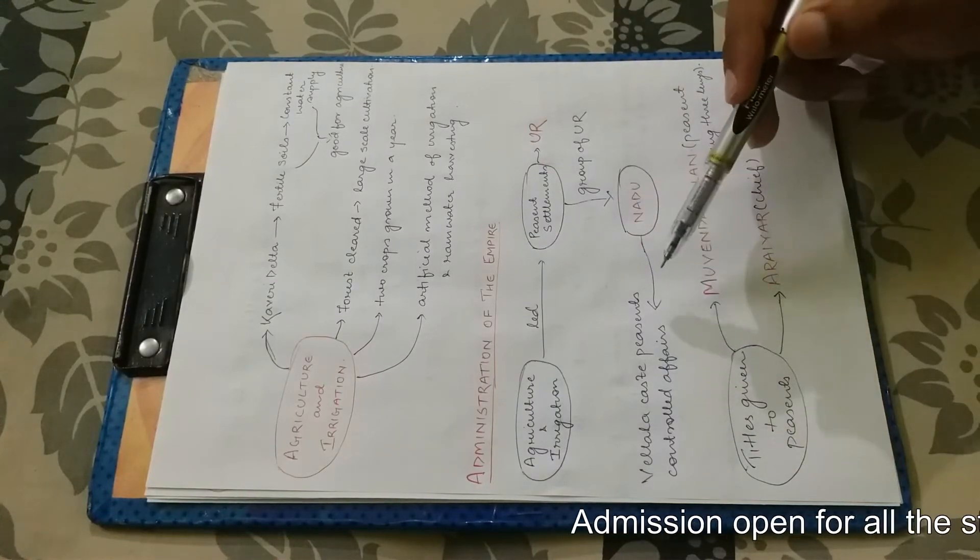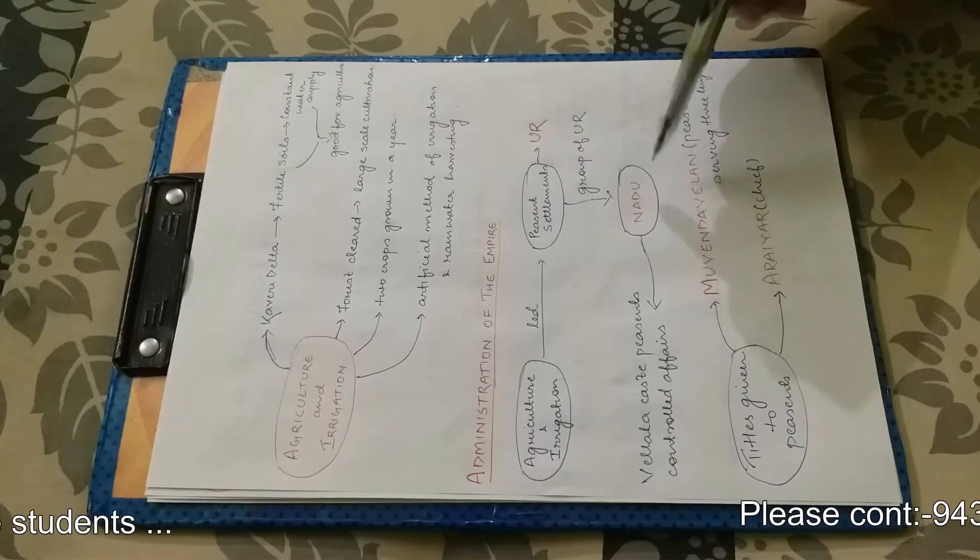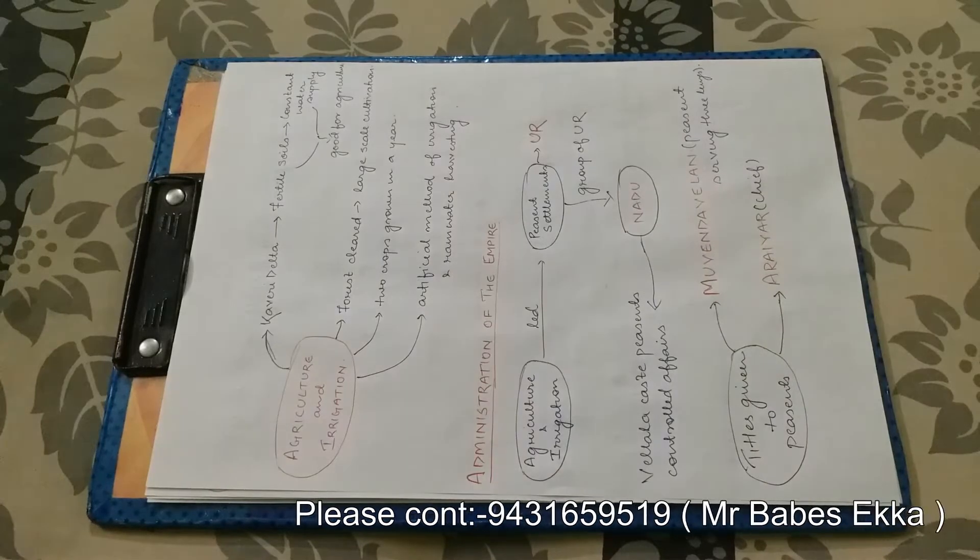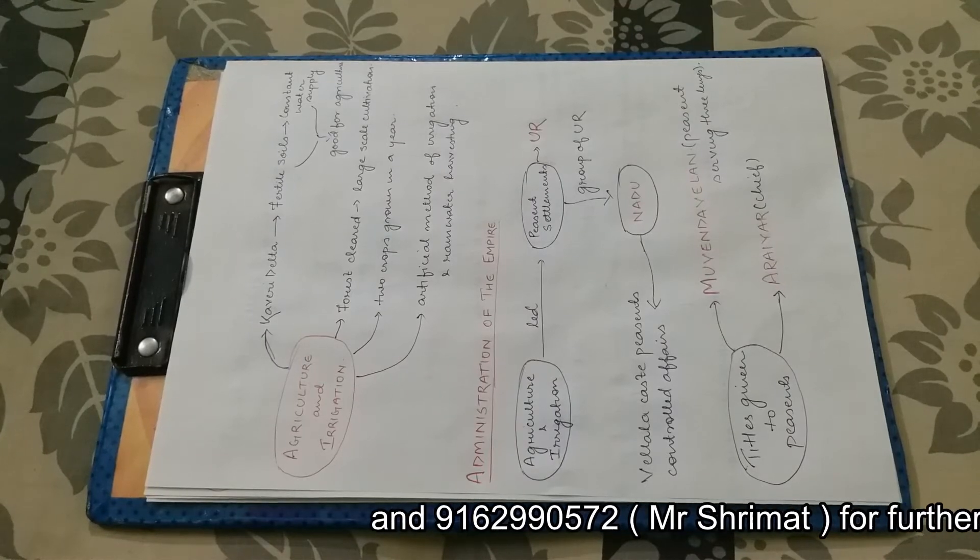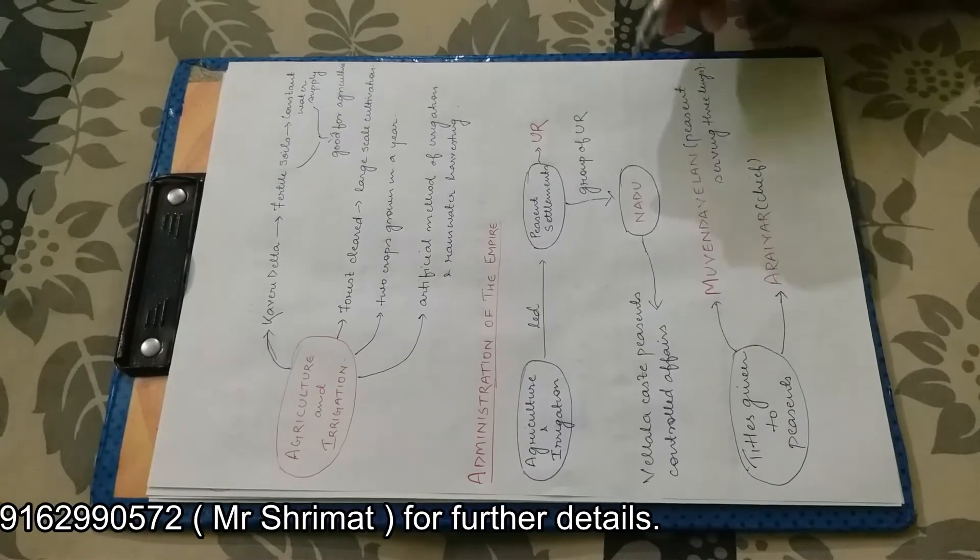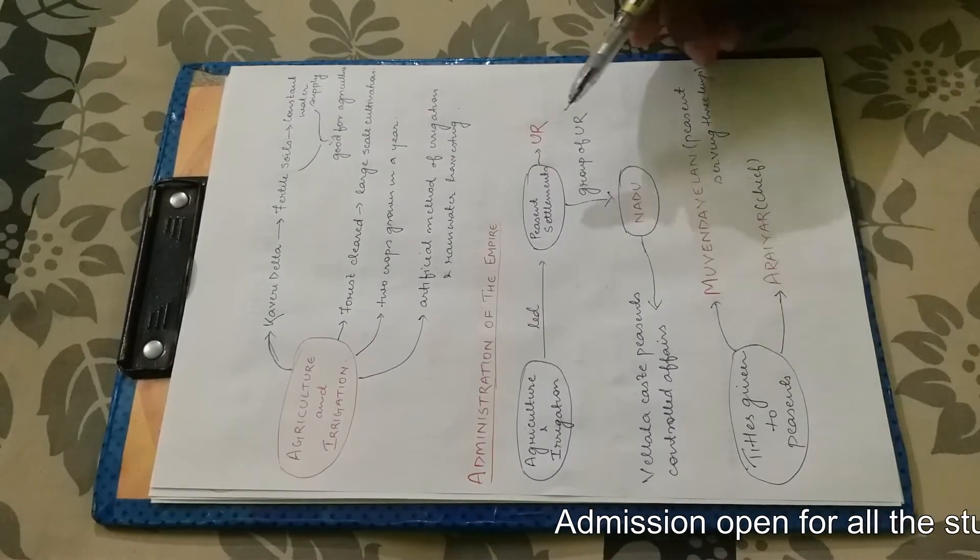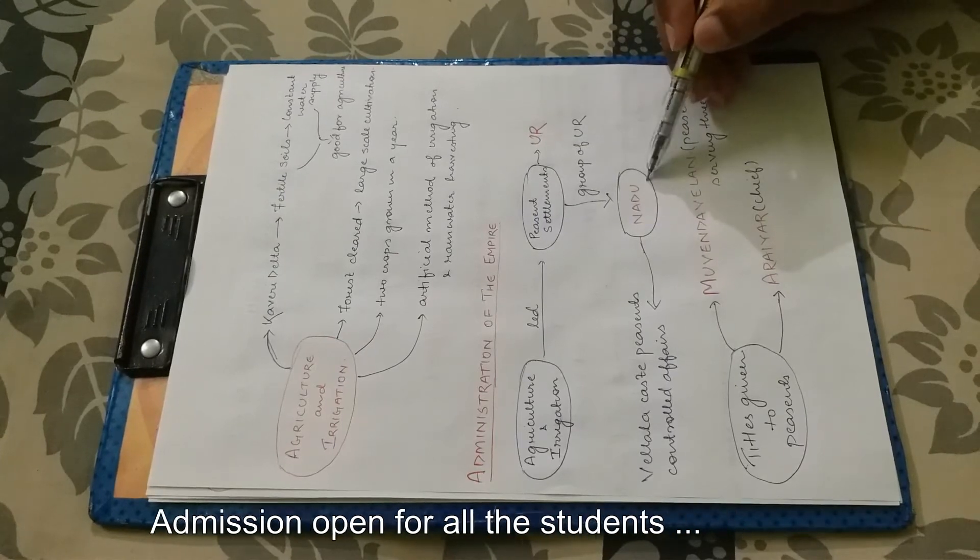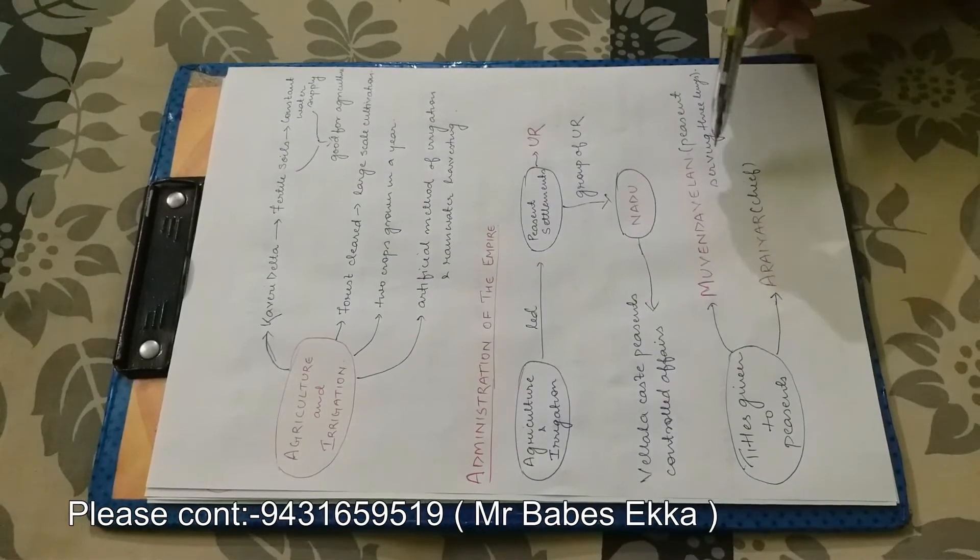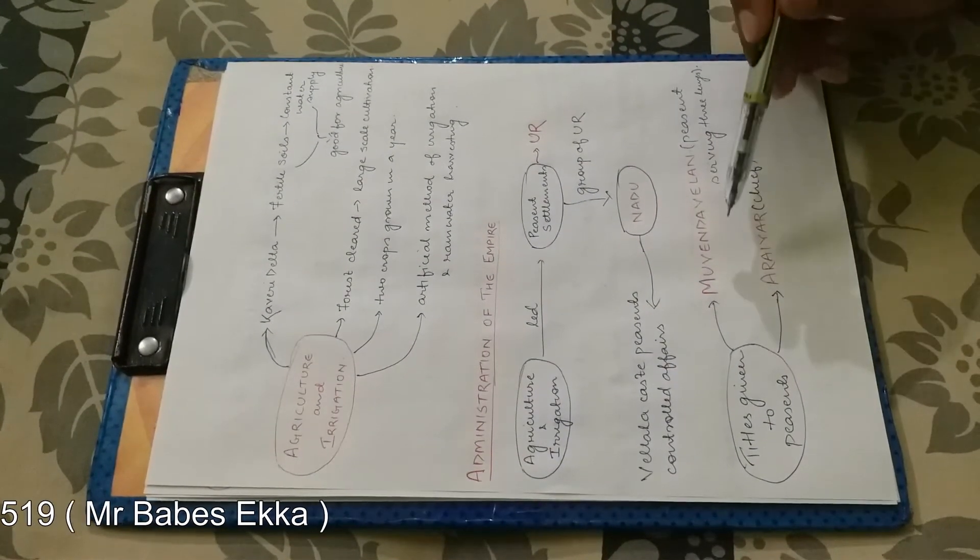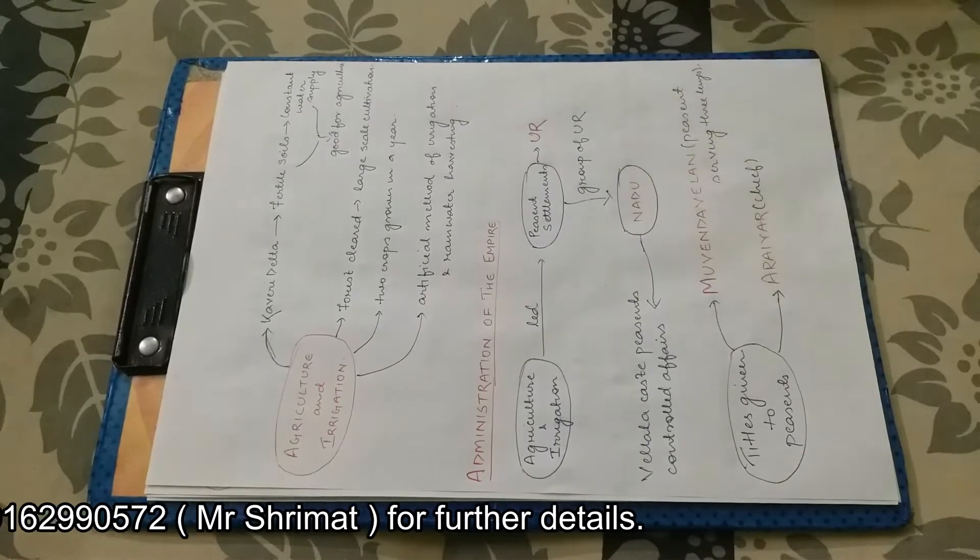And Vela caste peasants used to control the administration of Nardu. Vela caste peasants were high class, they were rich. So, they were given authority to administer this group of Ur which is called Nardu. What was Ur? A single peasant settlement. Group of Ur called Nardu. Now, what were some of the titles given to the peasants? The first one is Muvenda Velen. Muvenda Velen, that is peasant serving three kings. Arayar, that is the chief.